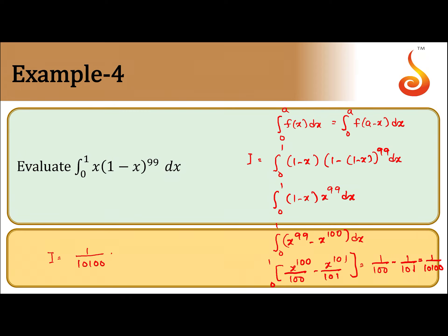Simple, the concept: integral from 0 to a of f(x) dx equal to integral from 0 to a of f(a minus x) dx. So what happens, x becomes 1 minus x and (1 minus x) to the power 99 becomes x to the power 99. We separate it and it is very easy to integrate and get the value.